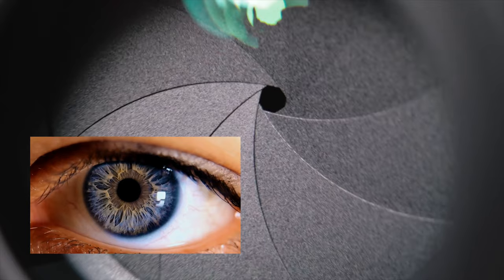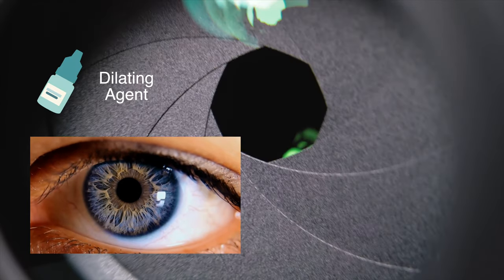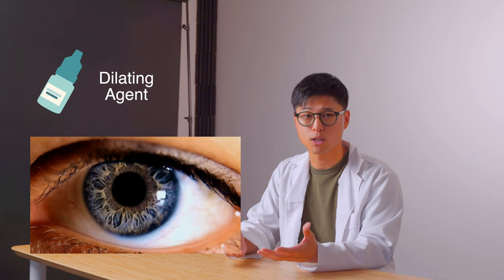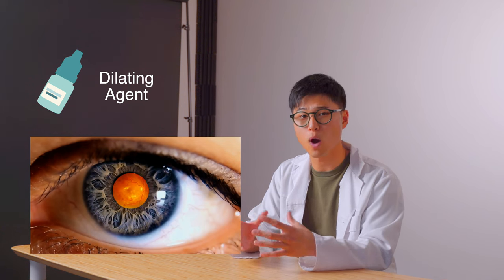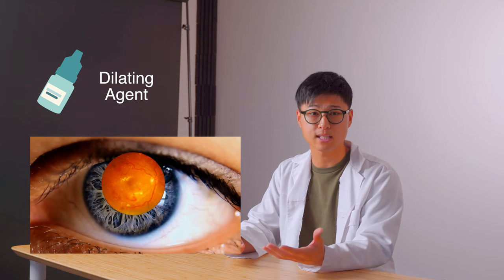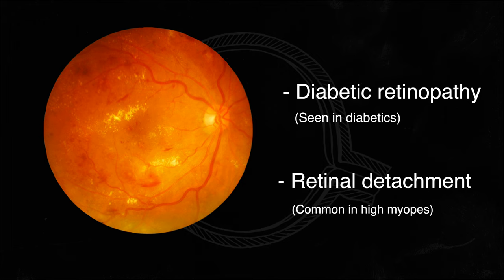The iris works very much like the aperture blades in a camera lens. They shrink and expand depending on how much light should be allowed into the eye. During an eye exam, your optometrist may use a dilating agent to paralyze the muscles in the iris to widen the pupil while closely examining the retina for diseases such as diabetic retinopathy or retinal detachments.